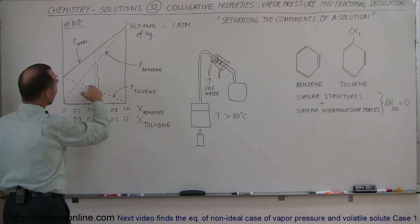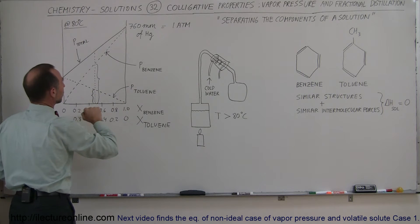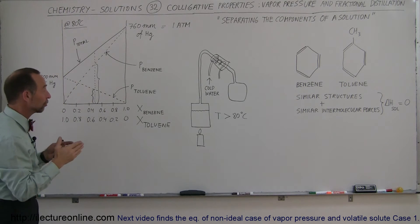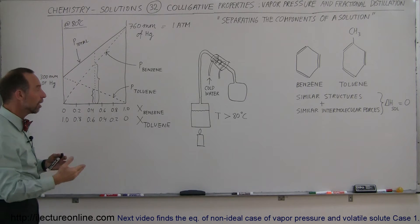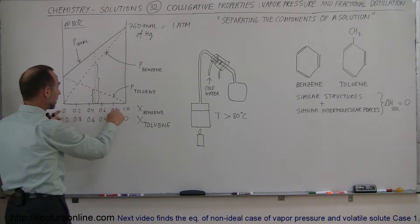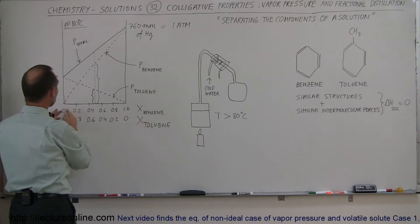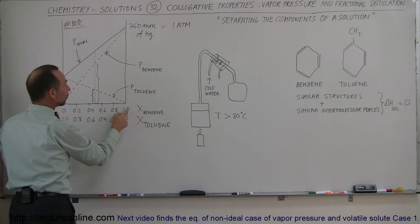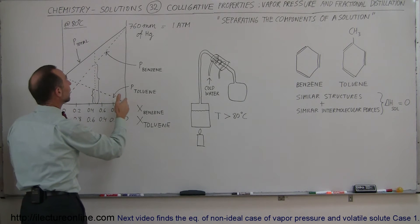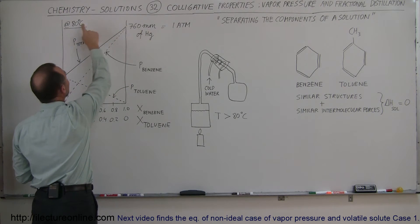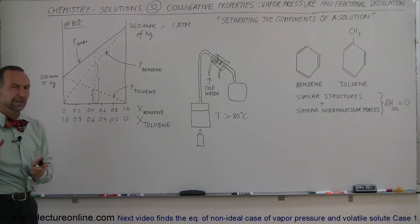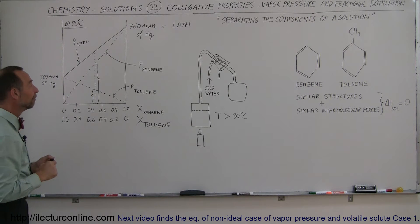On the diagram, this line represents the vapor pressure of toluene, and this line represents the vapor pressure of benzene. The vapor pressures are a function of the molar fraction of each component. The top line represents the molar fraction of benzene — if 100% of the solution is benzene, the entire vapor pressure is due to benzene, which at 80 degrees centigrade is 760 millimeters of mercury, or one atmosphere, and therefore also the boiling point of benzene.